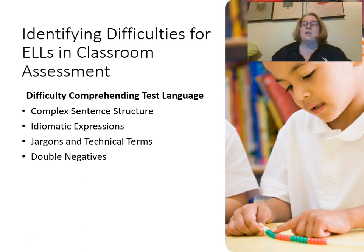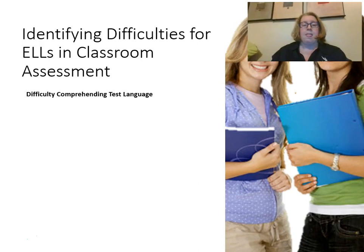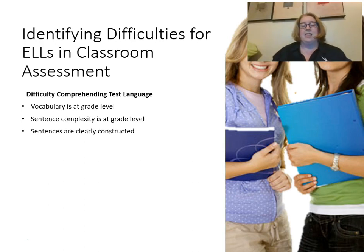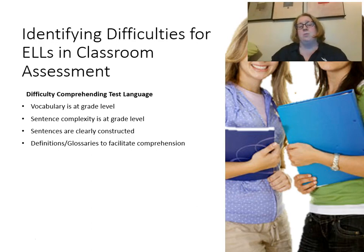Double negatives — which we talked about in developing the test — will be especially important for English language learners. Unclear organization in writing style and test formation will have a greater impact on an English language learner. We want to make sure that vocabulary level is at or below grade level, that sentence complexity is at or below grade level, and that sentences are clear. We might provide definitions or glossaries for students, or a dictionary for translation — though a dictionary can be cumbersome — so sometimes providing a glossary of just the terms used on that specific test is more helpful.